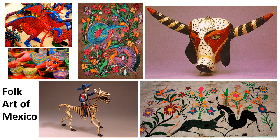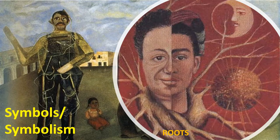Her artwork is also known for having a lot of symbols and symbolism. Here's a good example of roots and stringy things in her work — she often has strings or roots that connect or pull things together. If you look closely at the picture in the circle, you can see that half of that face is her face and half is her husband's face, and these roots are pulling them together, tying them together.